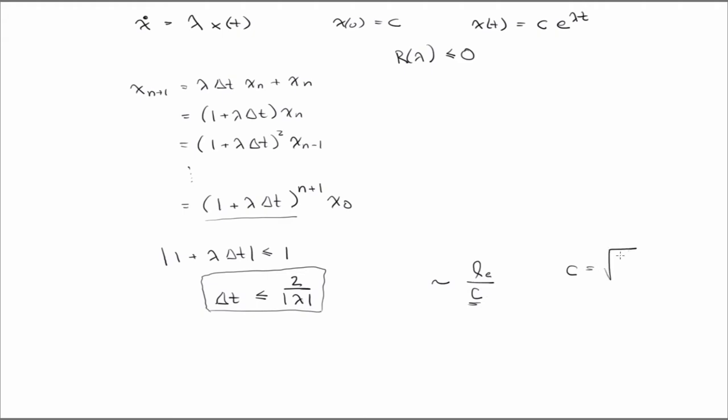So the wave speed is like the square root of the Young's modulus over the density. So it's the speed a longitudinal wave propagates through something. Okay?